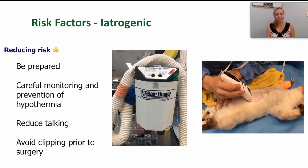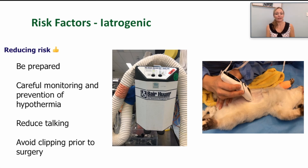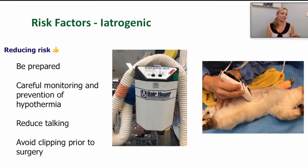So how can we reduce these risks? We can reduce the length of surgery — not by rushing, but by being organised. At VSS we use checklists, ensure familiarity with the procedure, have adequate assistance, and have equipment ready from the start. The same principles apply to reducing anaesthesia length. Alert your nursing staff so they can be organised as well. Talking during a procedure increases the risk of surgical site infection — you don't need to avoid it entirely, but for high-risk patients, it's worth being mindful.